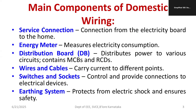The major components of domestic wiring are: first, the service connection. There are servicing companies — for example, in Karnataka we have BESCOM, MESCOM, HESCOM, and in Kerala we have KSEB (Kerala State Electricity Board). There are many distribution companies under government control. The key components include the energy meter, distribution board, wires and cables, switches and sockets, and the earthing system.